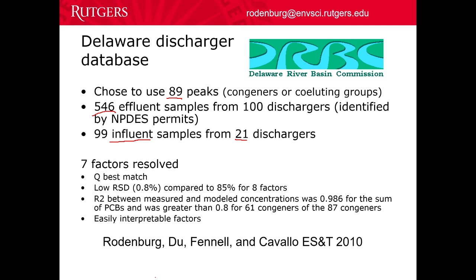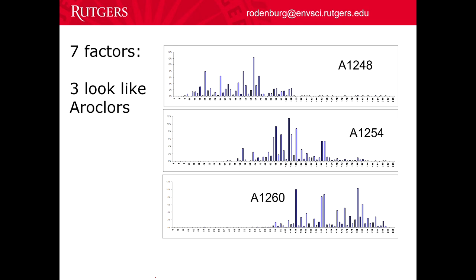I ran it through my PMF program and it said there were seven factors — seven source types or fingerprints — that described the vast majority of the data. Three of them looked like the original Aroclors: Aroclor 1248, 1254, and 1260. When you see a Gaussian bell curve distribution across PCB number on the x-axis, you're usually looking at an Aroclor. So that was three of the factors.